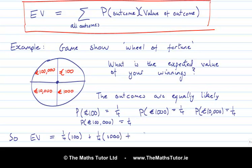And so on. The third outcome is €10,000. Its probability is a quarter. And value is €10,000. And finally, the fourth outcome is €100,000. Its probability is a quarter. And its value is €100,000.